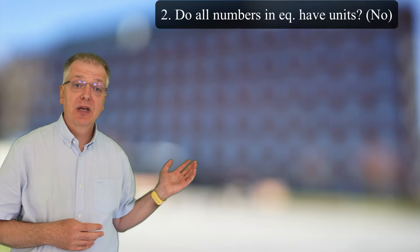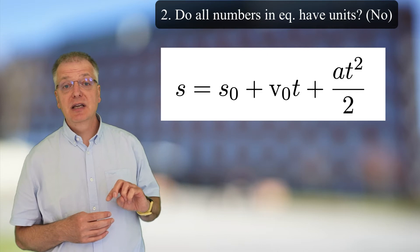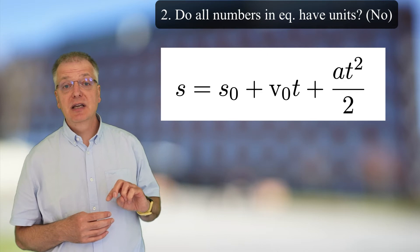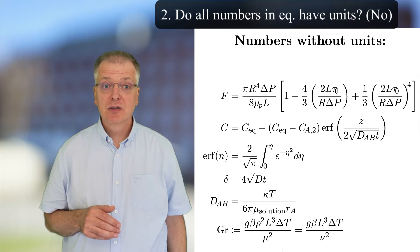Question 2. Do all numbers have units? No, they don't. If you, for example, take the equation for distance traveled, s equals s₀ plus v₀ times t plus a times t squared divided by 2, that you might recognize from school, the two twos in this equation have no unit. The same is true, for example, for the numbers spelled out in these equations.